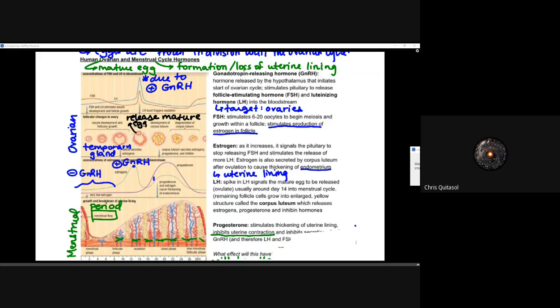The follicle is the structure within the ovary. Luteinizing hormone: a spike in LH signals the mature egg to be released — ovulation — usually around day 14 of the monthly cycle. The remaining follicle cells grow into an enlarged yellow structure called the corpus luteum, which releases estrogen, progesterone, and inhibin. The four big players of the menstrual cycle are GnRH, FSH, estrogen, and luteinizing hormone, which control and support the development of that mature egg.